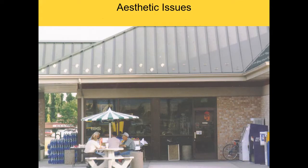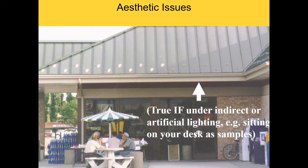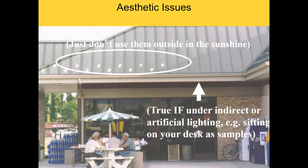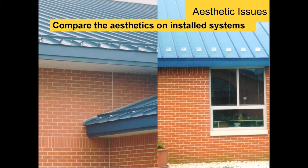Other mistakes: aesthetic issues. Plastic snow guards are practically invisible — as long as you use them in indirect lighting, they're barely visible. But don't put them outside in sunshine. That's all clear plastic — it looks like polka dots. Here you're comparing pre-finished color strip and color guard on the left, and clear plastic on the right. These are the lies you'll be told: 'It's clear, you don't see it.' You be the judge — it's pretty conspicuous.